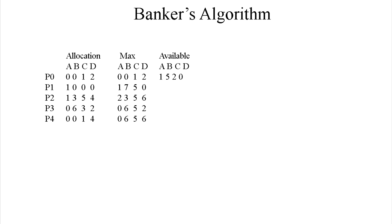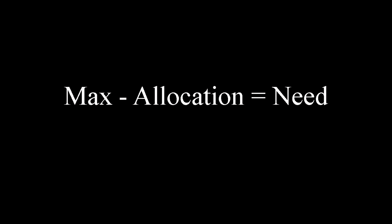Here's what I have prepared for us: a little allocation matrix, max matrix, and the current available. So step one — it's important to know that max minus allocation equals need. This is how we're going to generate our need matrix. There's going to be a little bit of linear algebra going on here, but don't worry, it's nothing too serious, and if you haven't had linear algebra, it won't take any time at all to pick up on what's going on.